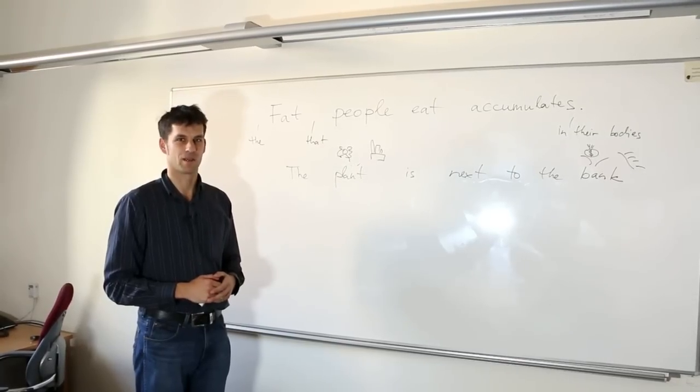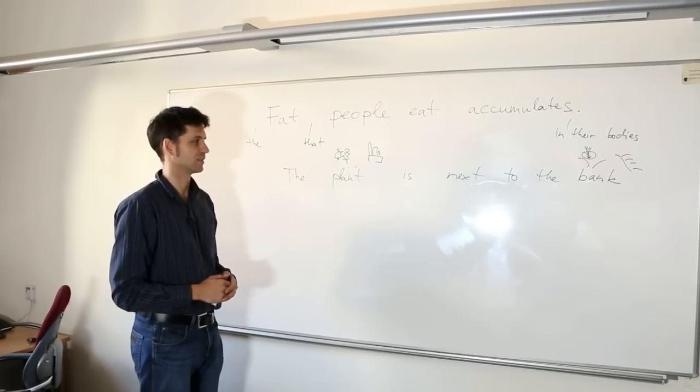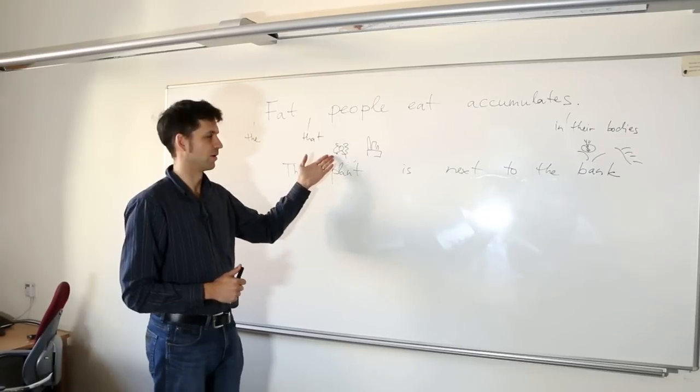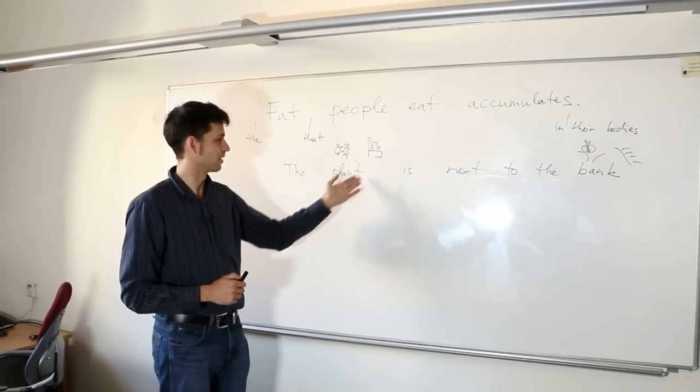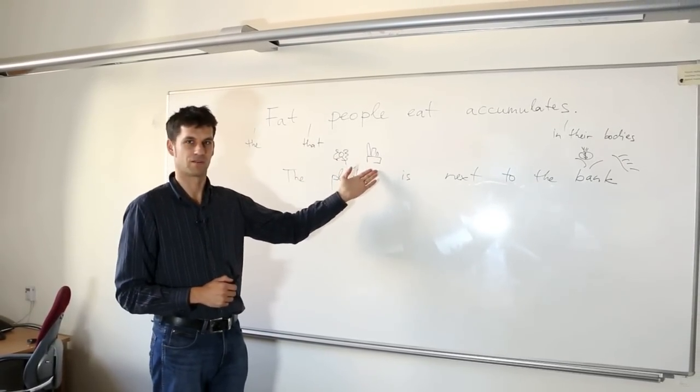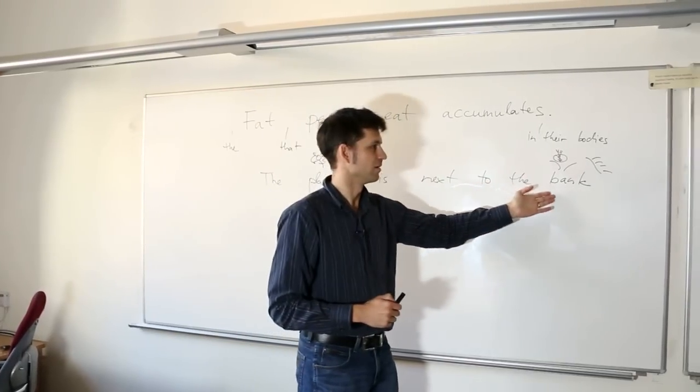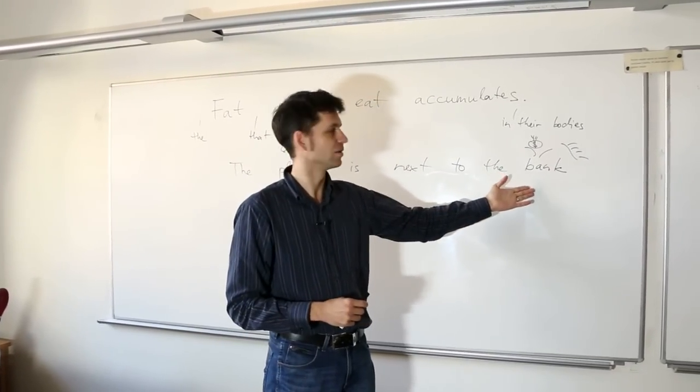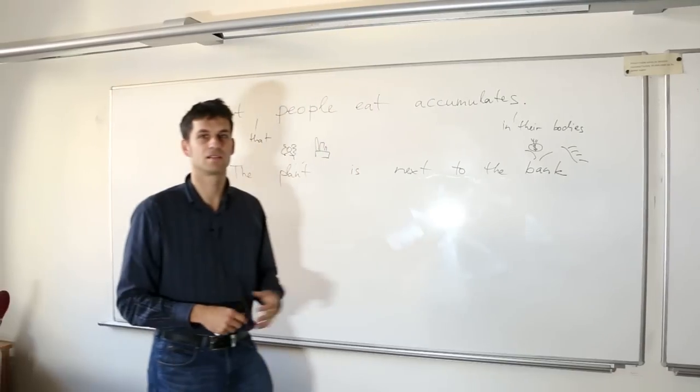It's the context that disambiguates. If the surrounding sentences talk about nature, then it's probably a flower. If they talk about production, then the plant probably means a factory. And similarly with the bank, if the sentences talk about money, it's a financial institution. If they talk about amphibians, it would be a river.